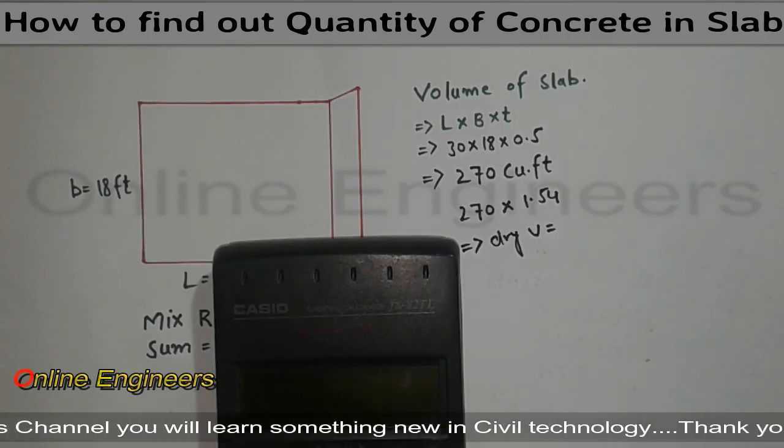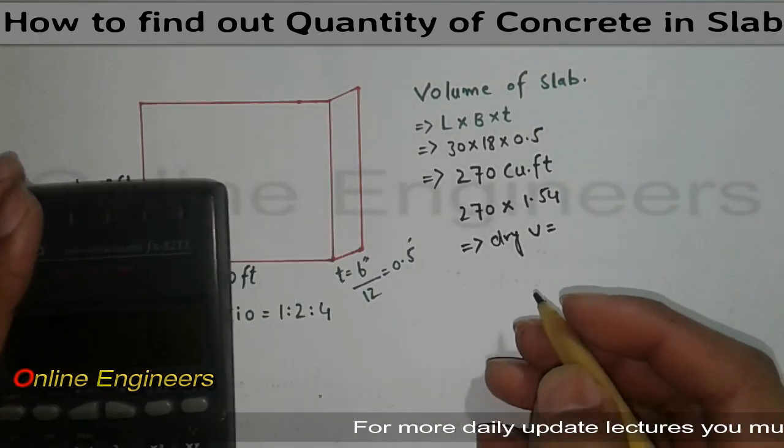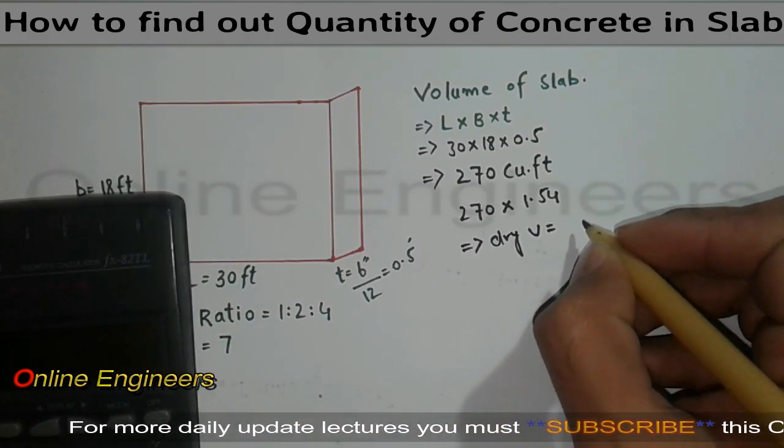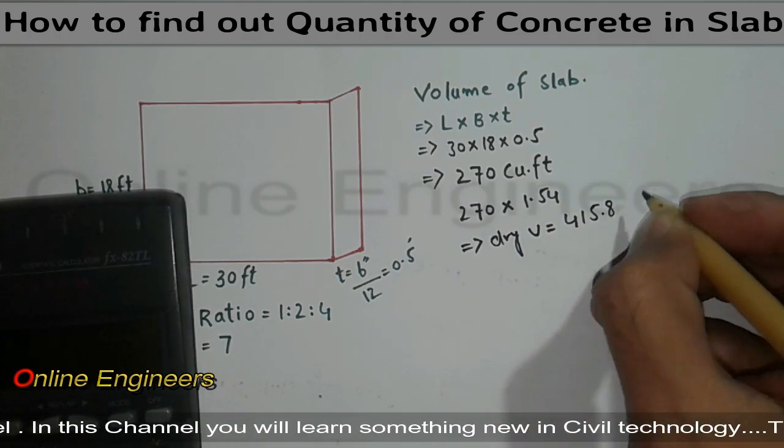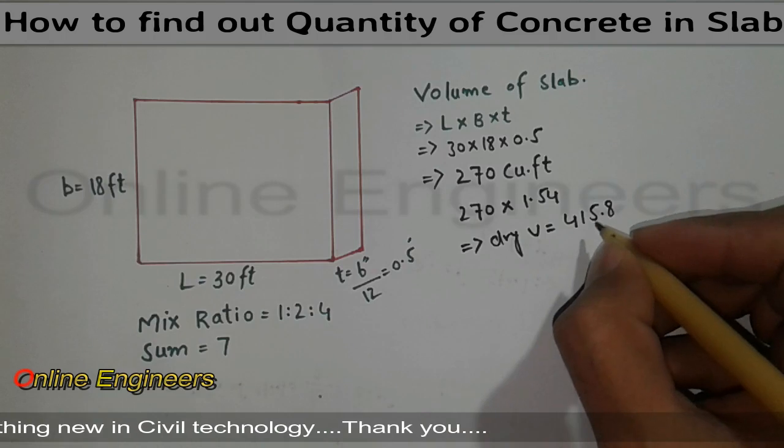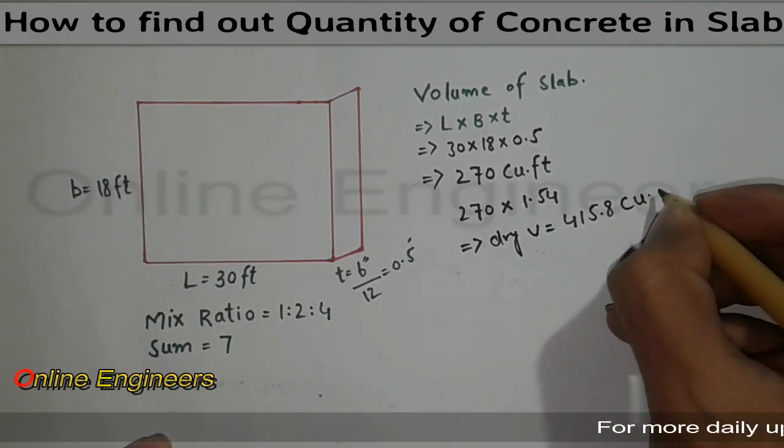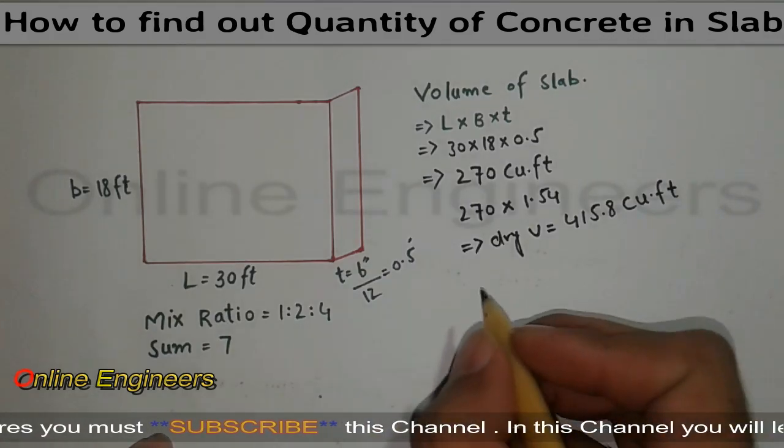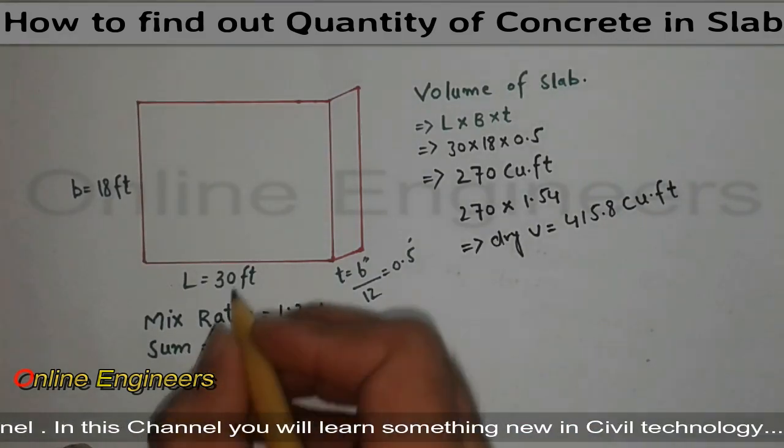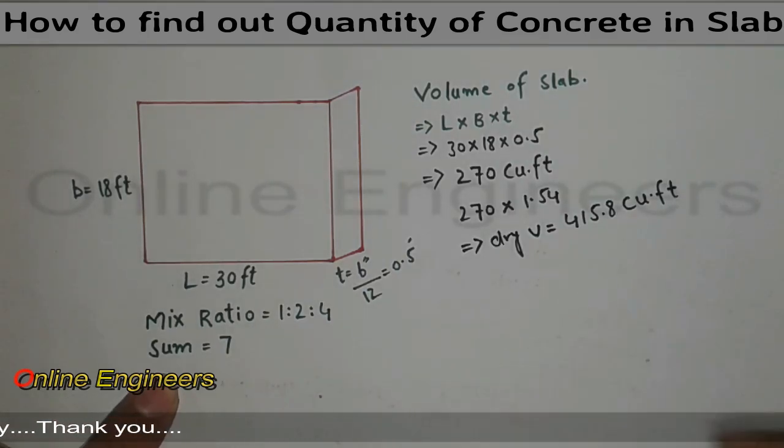270 x 1.54, so this is 415.8 cubic feet. So now I can easily find quantity of sand, cement, and crush.